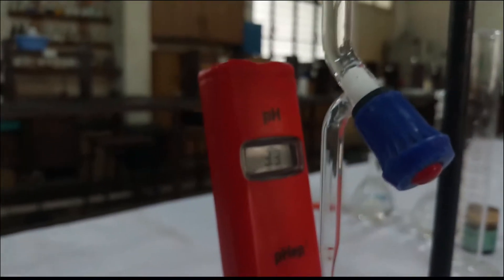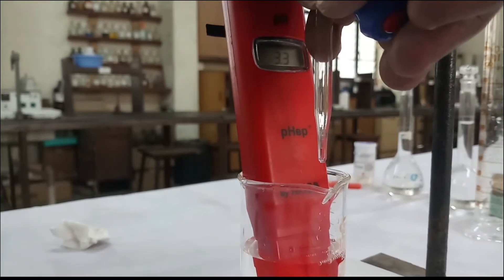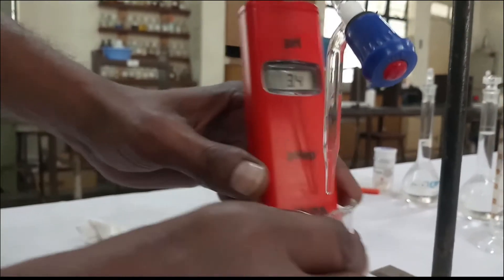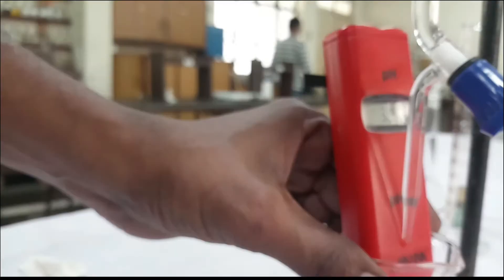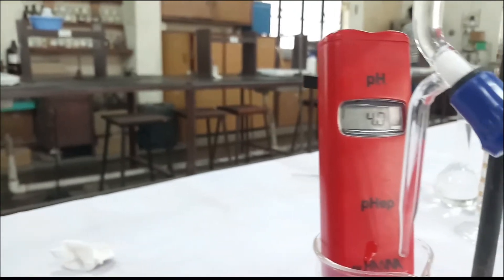Now add 0.2 ml NaOH from the burette into the beaker containing acetic acid. Stir the solution slightly and note down the pH. Here we can see it is 3.8. The pH has increased due to addition of a base into the acid. So every time we have to add 0.2 ml of NaOH and just go on noting down the pH. So now it is showing 4.0.